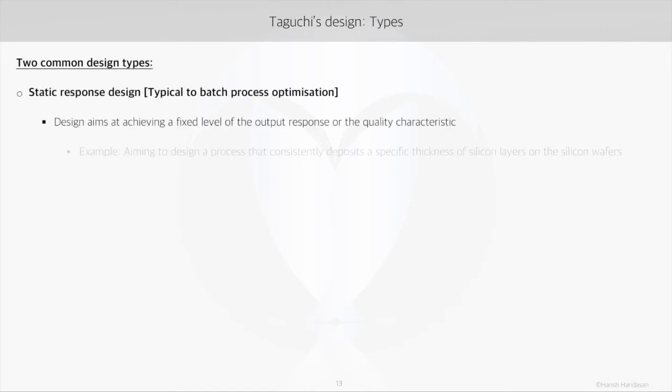In practice, we see the application of Taguchi's method in two scenarios. One is when we want to find the optimal levels for input factors that can provide us the best level of output response — such a level would be a fixed level. Like in a silicon wafer design, we would want a process that precisely coats a specific thickness of silicon layer on the wafer. This scenario calls for a static response design.